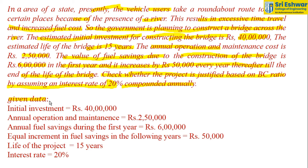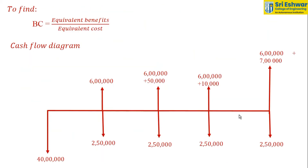Given data: Initial investment is Rs. 40,00,000. Annual operation and maintenance cost is Rs. 2,50,000. Annual fuel savings during the first year is Rs. 6,00,000. Equal increment in fuel savings in the following years is Rs. 50,000. Life of the project is 15 years. Interest rate is 20%. We have to find the BC ratio.